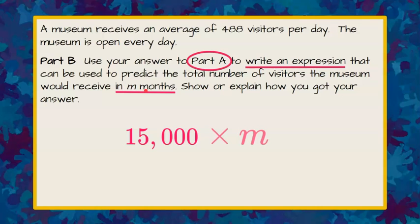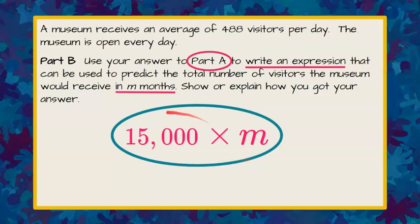They've told us to use the variable or letter m to represent months. So we want to predict the total number of visitors in m months. We have 15,000 in one month times the unknown number of months m. Here's our mathematical expression: 15,000 times m.